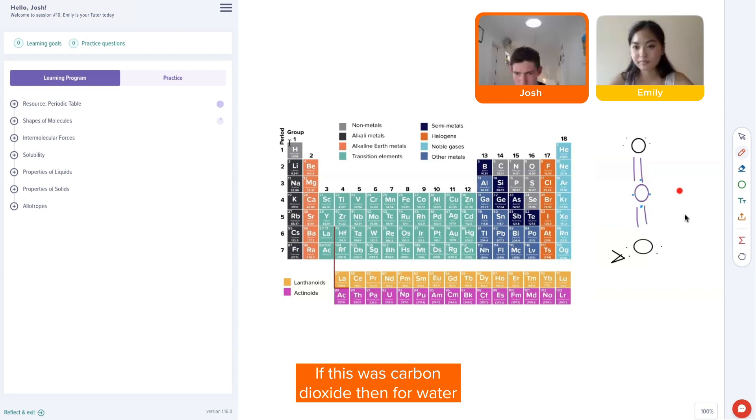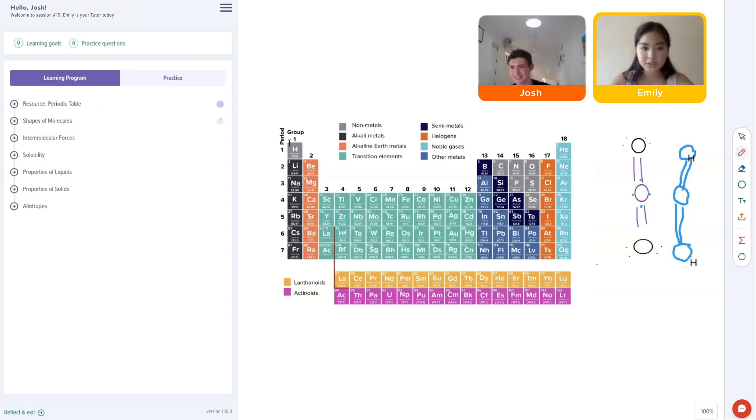Then for water, something like that? Yes, perfect. Now if we look at hydrogen in the periodic table, hydrogen has an atomic number of one, so what does that tell us about the number of electrons in a hydrogen?